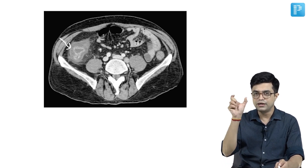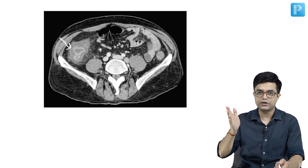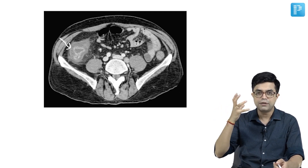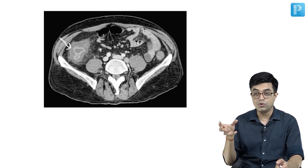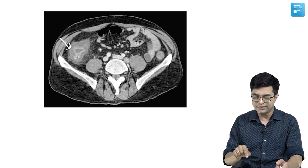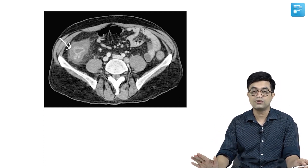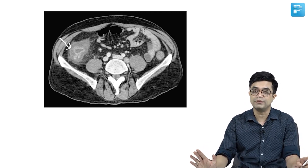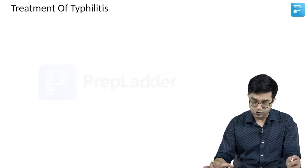But when the question states: neutropenic patient of leukemia started on chemotherapy, presents with sudden onset lower abdominal pain on the right side, and a CT scan is shown — the likely diagnosis, the only diagnosis which can be, is Tiflitis in the patient.